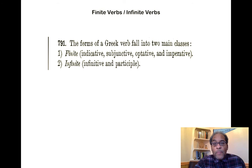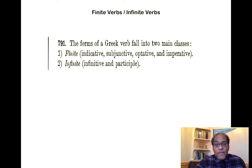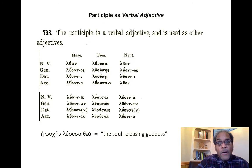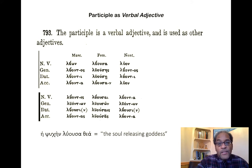The forms of a Greek verb fall into two main classes. The finite forms — which we've been talking about: indicative, subjunctive, optative, and imperative — and the infinite forms: the infinitive and the participle. All that's meant by infinite forms is that they are not characterized by first, second, and third person. They don't mark those.